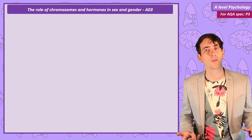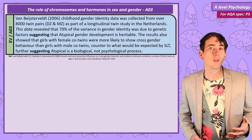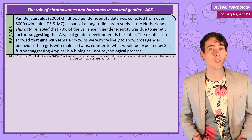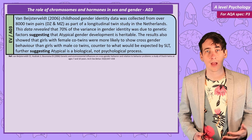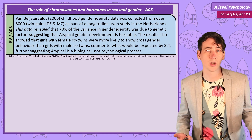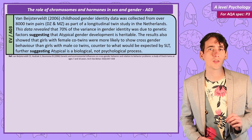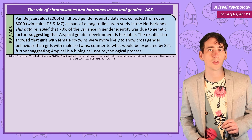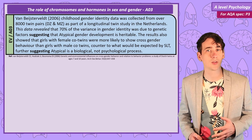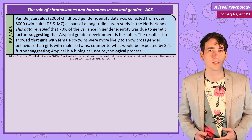The first, by van Beuscheveld, looked at genetic evidence, using a very large sample of over 8,000 twin pairs from the Netherlands. These were either dizygotic, so sharing half the genome, or monozygotic, so genetically identical. The mothers of these twins were questioned about the gender identity of their children. When they looked at the data, the genetic difference between the monozygotic and dizygotic twins accounted for 70% of the variance in gender identity.